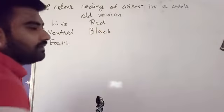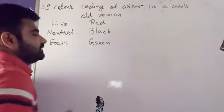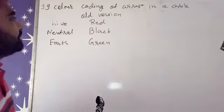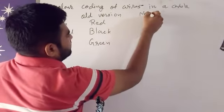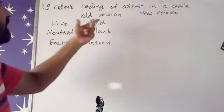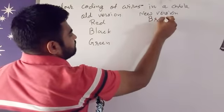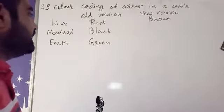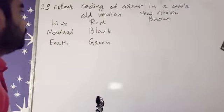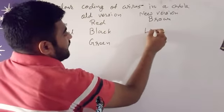In the old version, neutral is black and earth is green. But in the new version, brown is used for live, and for neutral we use light blue.